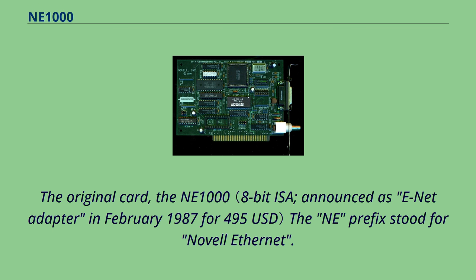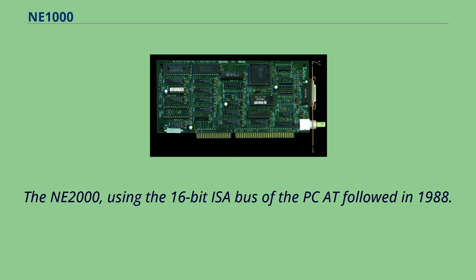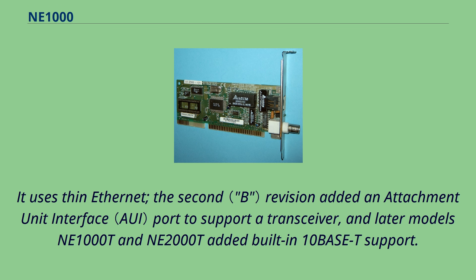The original card, the NE-1000 — where the NE prefix stood for Novell Ethernet — was followed by the NE-2000 in 1988, using the 16-bit ISA bus of the PC. It uses thin Ethernet; the second revision added an attachment unit interface port to support a transceiver, and later models, the NE-1000T and NE-2000T, added built-in 10BASE-T support.